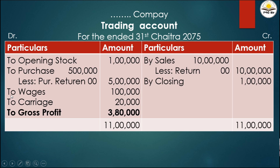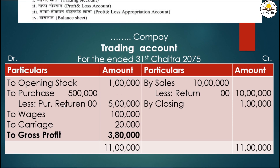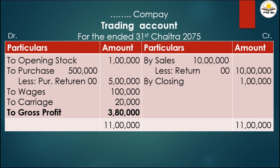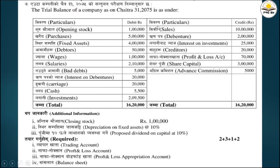Next, wages 1 lakh rupees on the debit side. Carriage 20,000 - now carriage inward goes to the trading account, while carriage outward goes to the P&L account. This carriage is carriage inward, so it goes to the trading account debit side. On the credit side of the trading account: sales 10 lakh rupees.